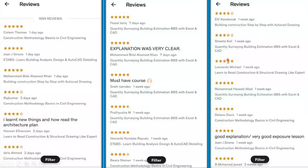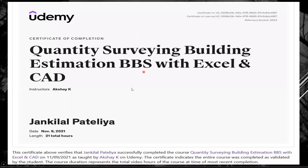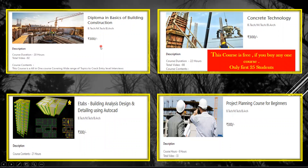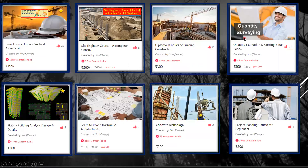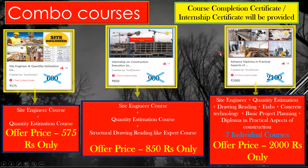This is the certificate you are going to get once you are done with the course. Now the best offer is: you can take any course out of the seven courses — including concrete technology — which you will get free, but only for the first 25 students. After 25 student enrollments, no one else will get this offer. If you have a combo offer, you can take the site engineer, quantity estimation, and drawing reading courses together.